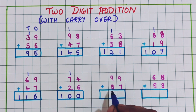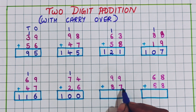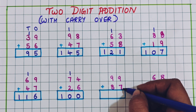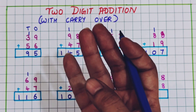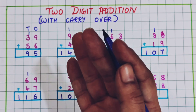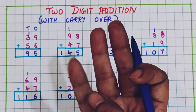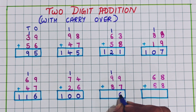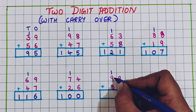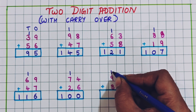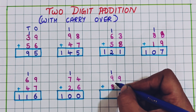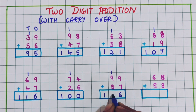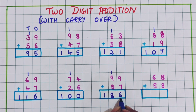Now 99 plus 87. Now 9 plus 7: 10, 11, 12, 13, 14, 15, 16. So here I will write 16. Now 9 plus 1 is 10, and 10 plus 8 is 18. So the answer is 186.